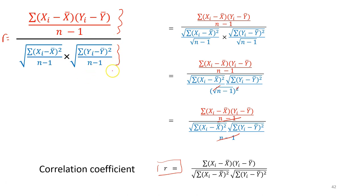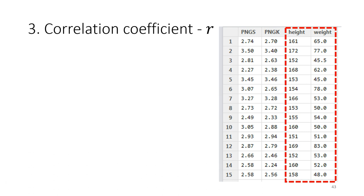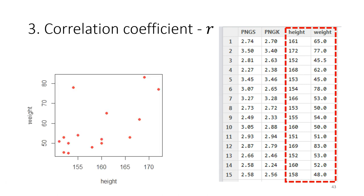The correlation coefficient is a standardized covariance between two variables, and this is the formula to calculate it. As an example, we want to investigate the relationship between the body height and body weight of 15 students. We collect the data, organize it, and summarize it in a plot. The next step is to calculate the correlation coefficient.